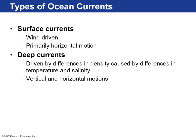Deep currents are the other type of ocean current, and those aren't driven by motion of air. They're driven by differences in density from different water masses, and those density differences are driven by temperature — colder or warmer waters — or differences in salinity. Deep currents involve not only horizontal motions but also vertical movement, up and down, as a result of those density differences.